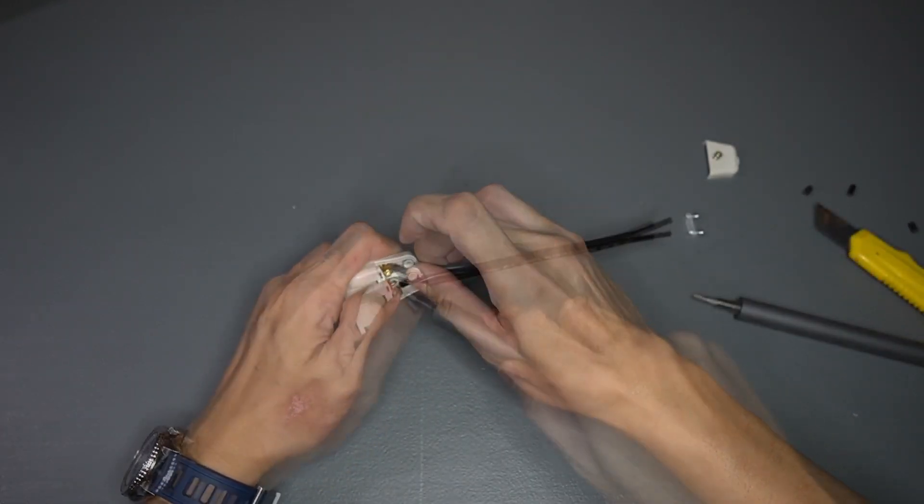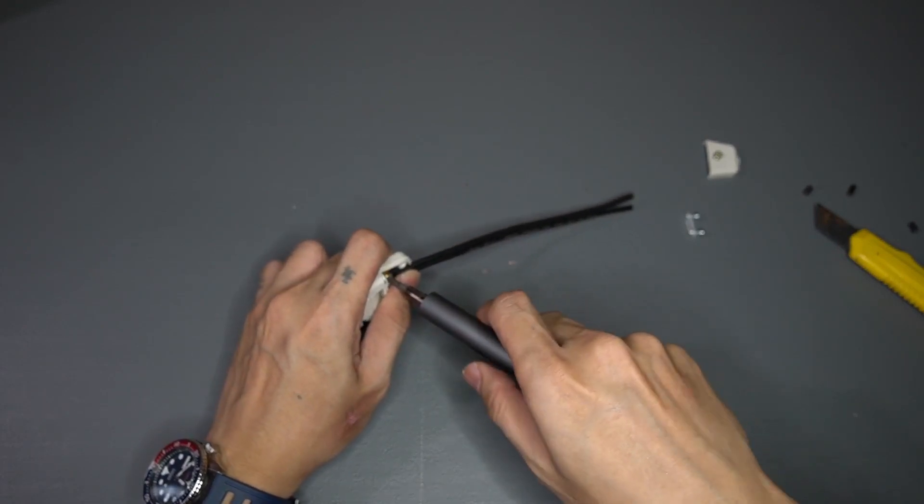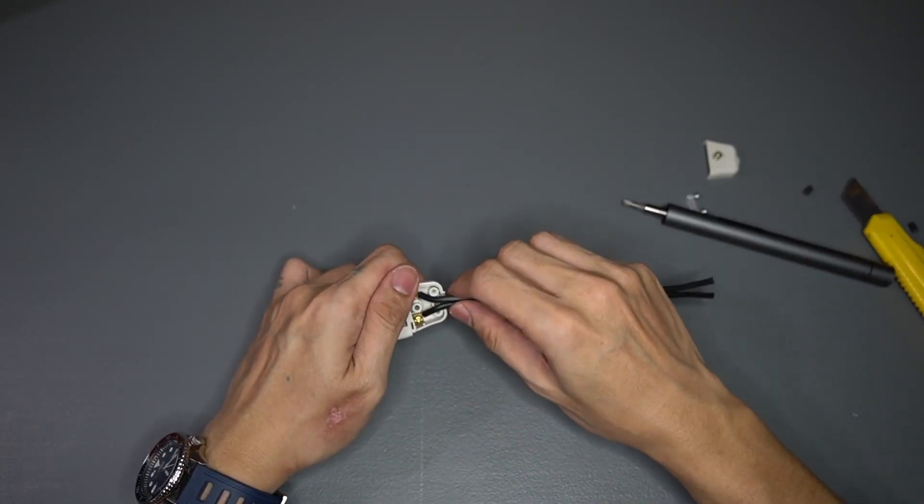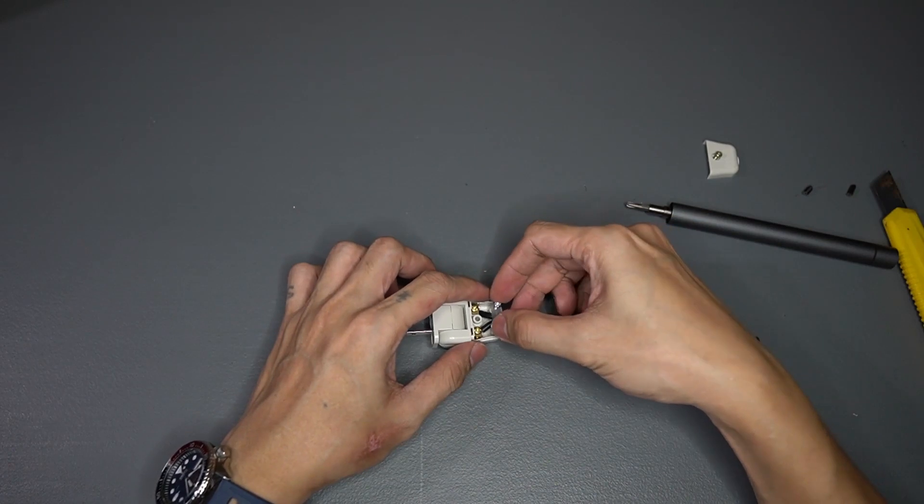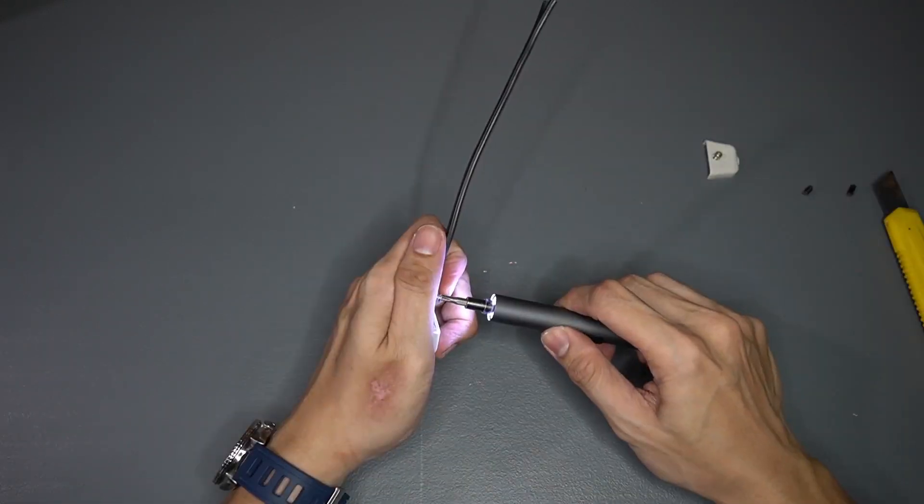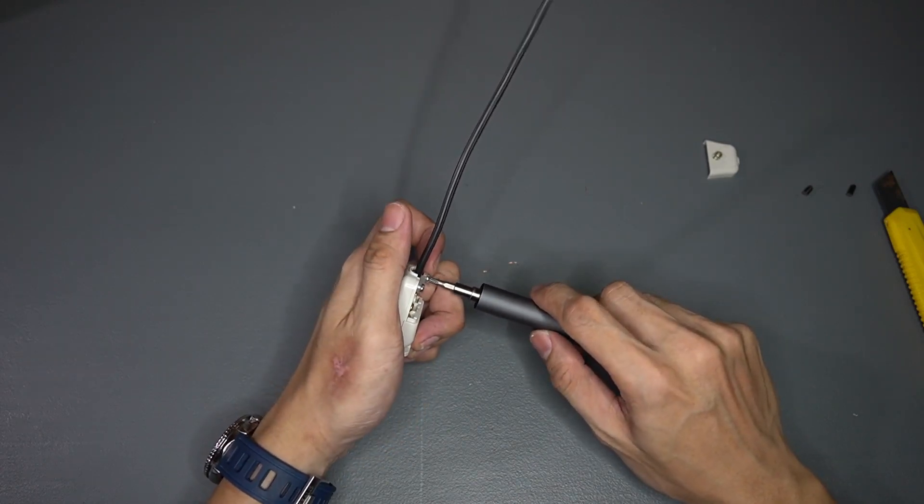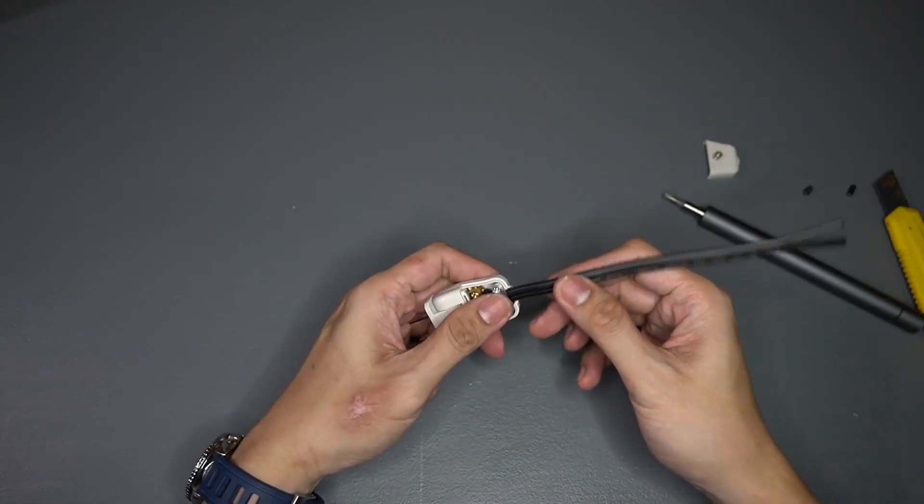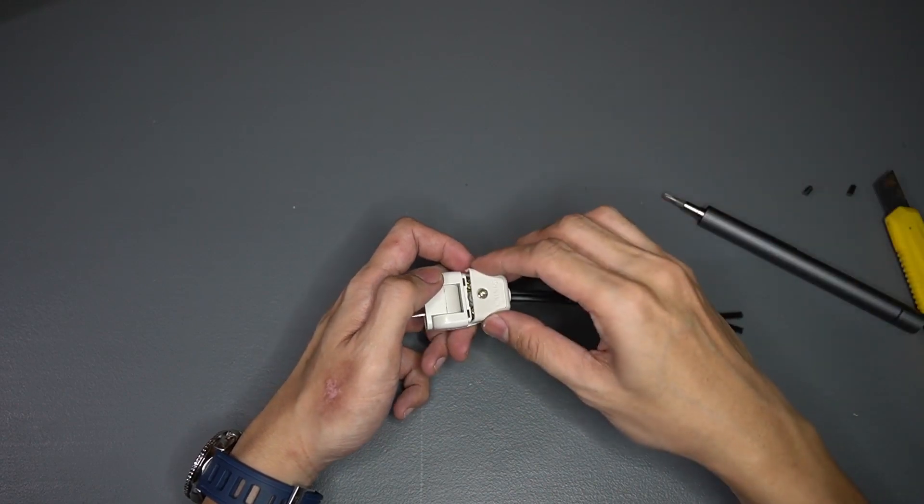Do the same procedure for the other wire. Don't forget to check and double check your connection. Tuck the wires to the grooves of the plug and fix the wire using the clamp. Screw the cover back in.